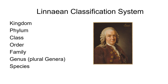Within kingdoms you have phyla — sometimes in plants you'll see them called divisions. Below phylums you have classes, then orders, then families, and then genera. Be careful with genera: a single is genus and plural is genera. Some people will say 'genuses' but you'll sound like you don't know what you're talking about, so make sure you say genera if you have more than one genus. And finally the level of classification that is the smallest is the species. Every now and then you'll see subspecies, but for the most part species is as low a level of classification as you'll see.